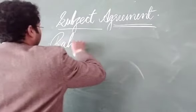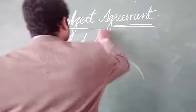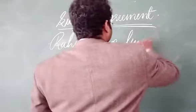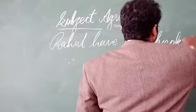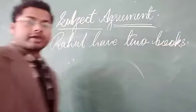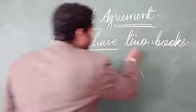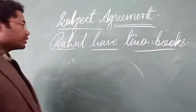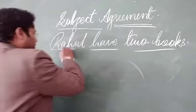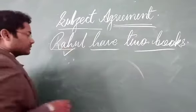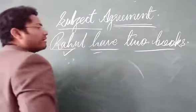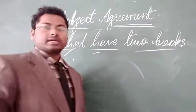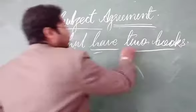Next example: Rahul has two books. The subject of this sentence is 'Rahul.' This is the verb — use of 'has' and 'have.' Two books.